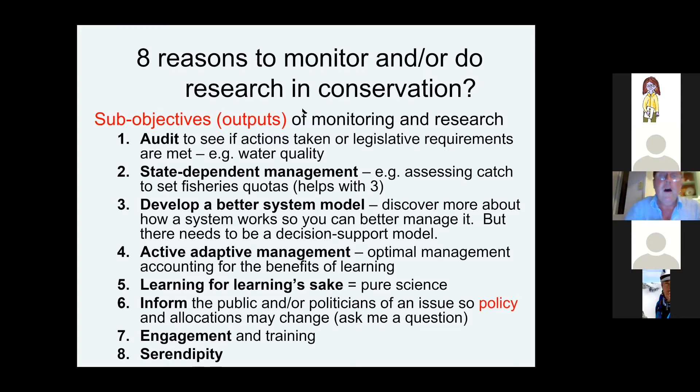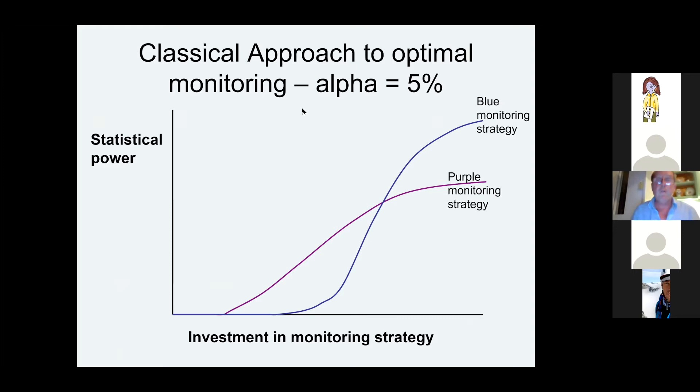When I'm talking about optimal monitoring, I'm putting monitoring into my favourite framework, which is a decision science framework. Most of our group's work has used decision science to optimally allocate funds to actions in space. This is a bit different — we're now thinking about how decision science can be used to allocate funds to monitoring and science.